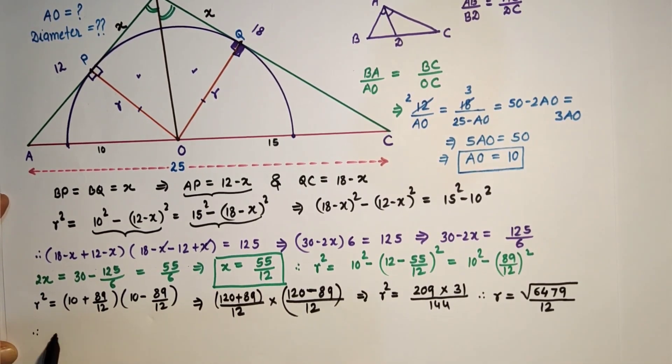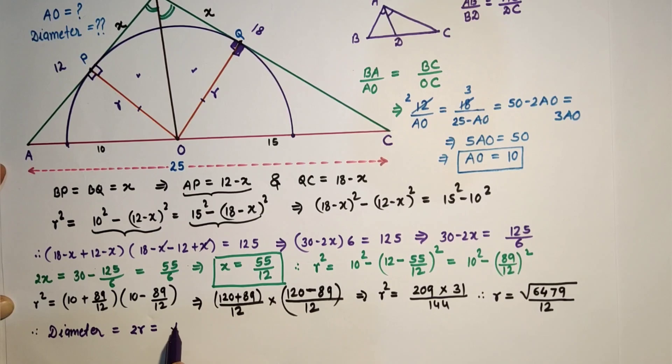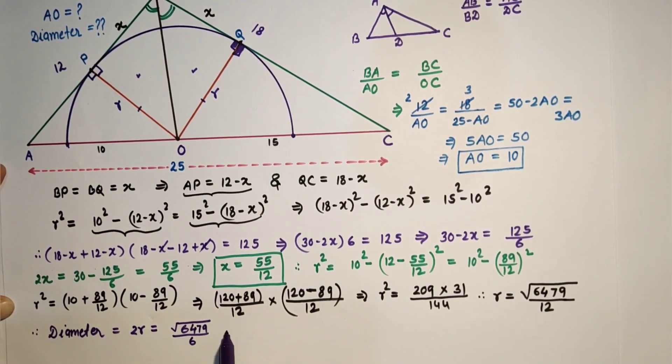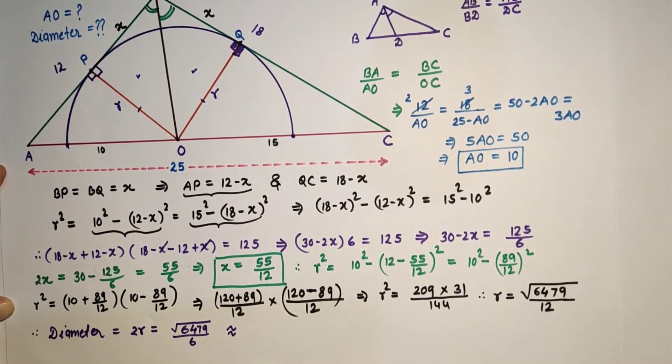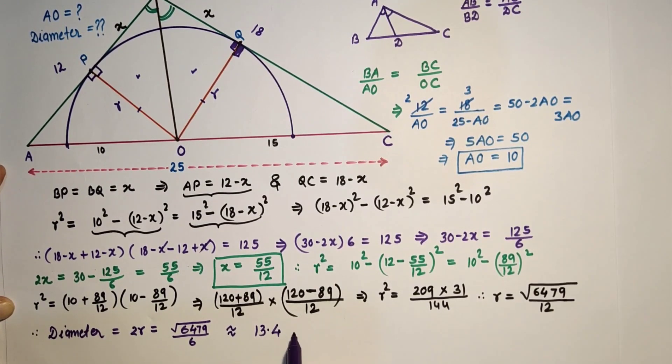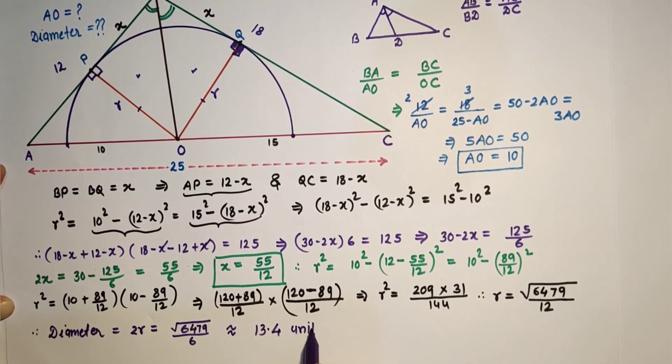So therefore diameter is 2R, which is under root 6479 by 6, and that is approximately 13.4 units. And that is the answer.